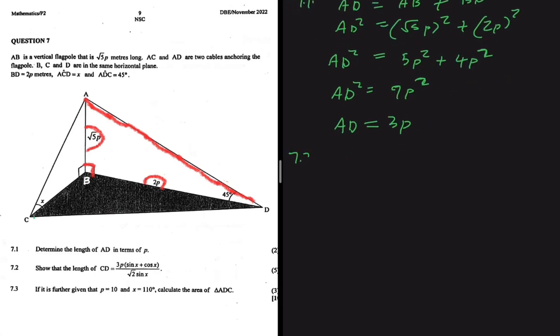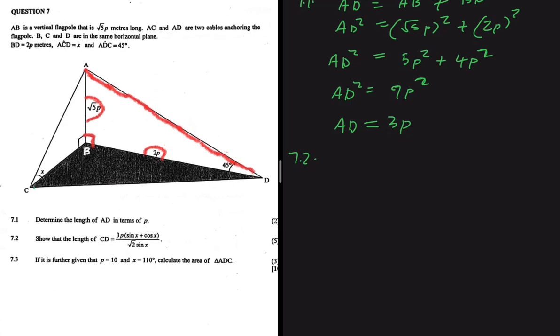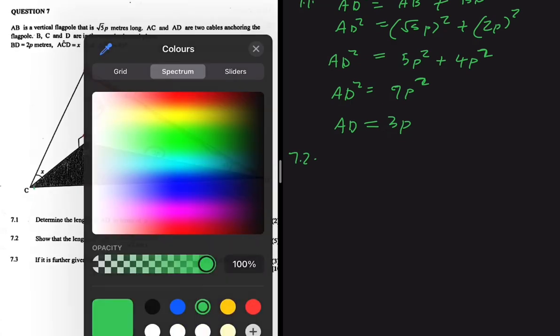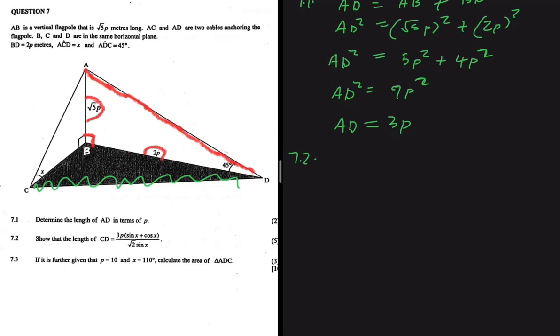Now let's solve 7.2. 7.2 says let's show that the length of CD — let's just highlight CD before we go any further. So we are interested in CD. Let's show that the length of CD equals 3P sine of X plus cos X divided by square root of 2 sine of X. So let's look at CD. We have the length of AD, which is 3P, and then we have CD.